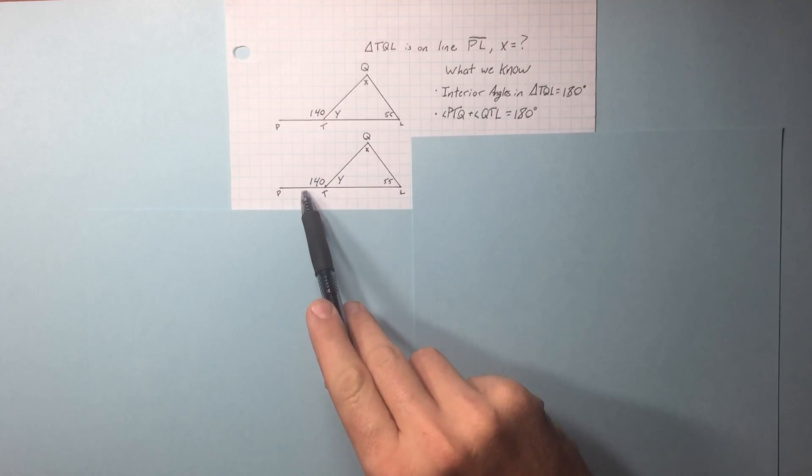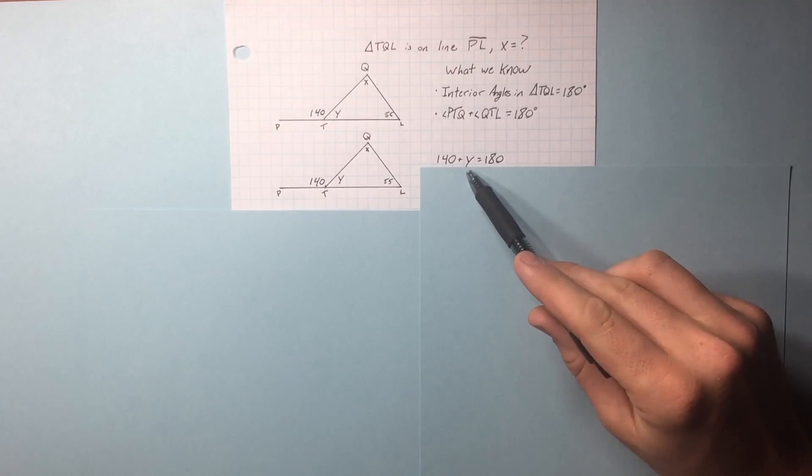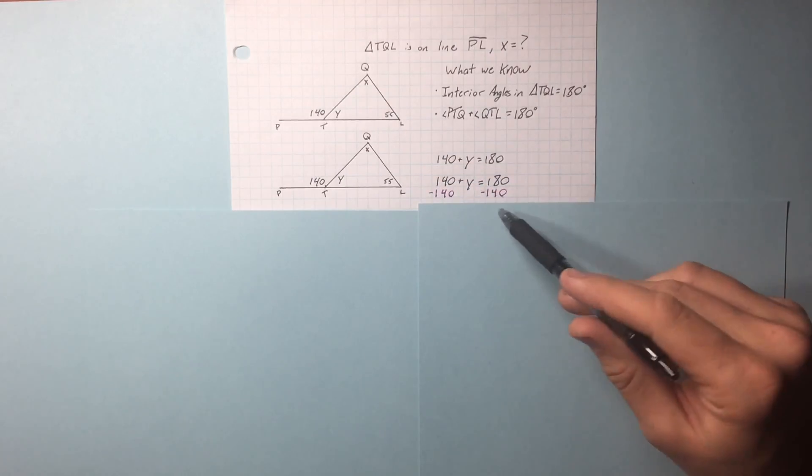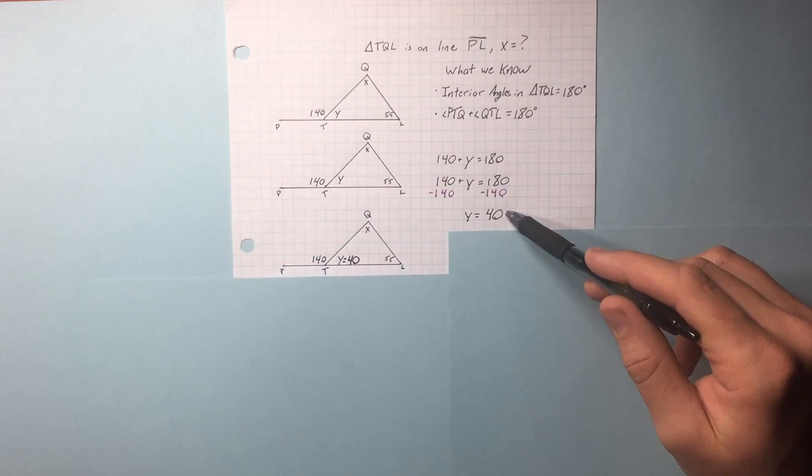These two angles right here have to add up to equal 180. 140 plus y equal 180. We're going to subtract 140 from each side, and we're left with our y. y equals 40. Add it to your diagram.